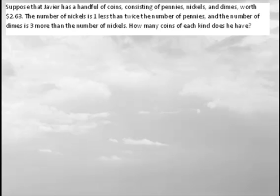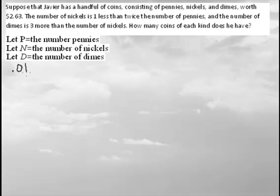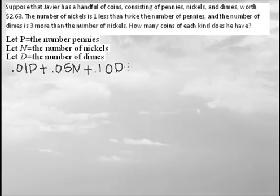Let's start by setting up our variables. Let p be the number of pennies, n be the number of nickels, and d be the number of dimes. Now let's set up our equation. We know that a penny is worth 0.01, a nickel is worth 0.05, and a dime is worth 0.10. So: 0.01p + 0.05n + 0.10d = $2.63.